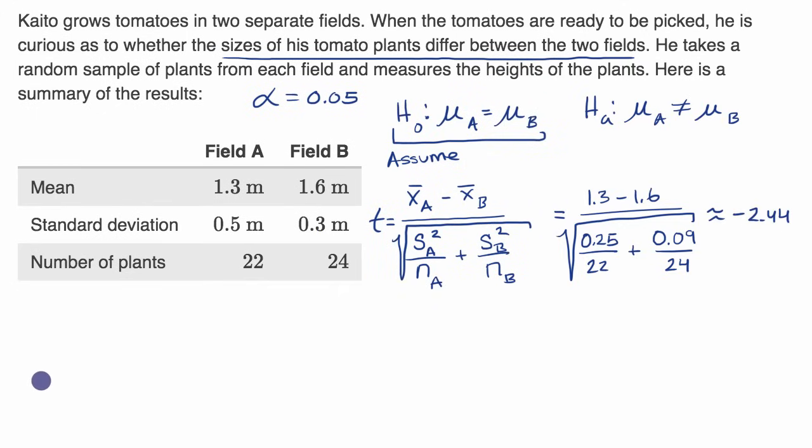So if you think about a t-distribution, and we'll use our calculator to figure out this probability, this is a t-distribution right over here. This would be the assumed mean of our t-distribution. We got a t-statistic of negative 2.44, so we're right over here. This is negative 2.44.